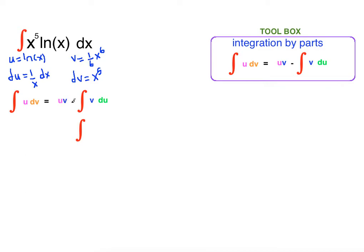What is u times v? u is ln x, v is 1 sixth x to the sixth. 1 sixth x to the sixth ln of x minus integral of v du.